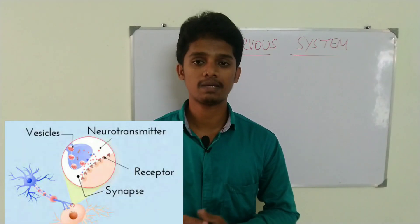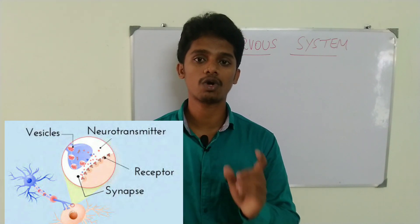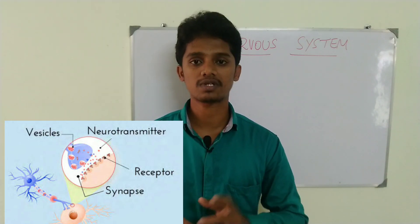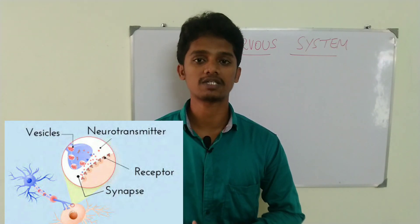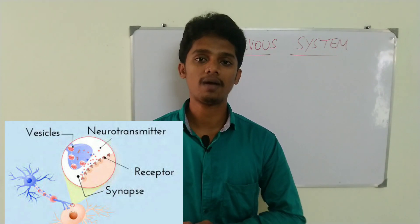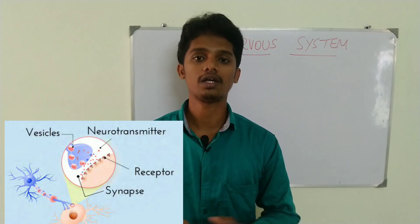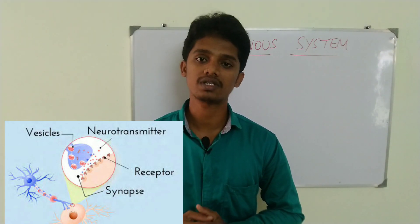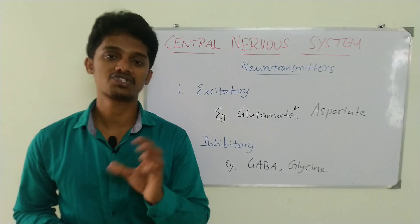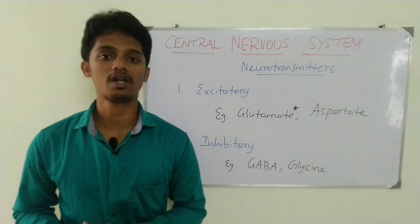What is a Neurotransmitter? In a Neuron, there is a Neurotransmitter. It is a substance which transmits a message from one neuron to another — transmitting messages to organs and tissues.